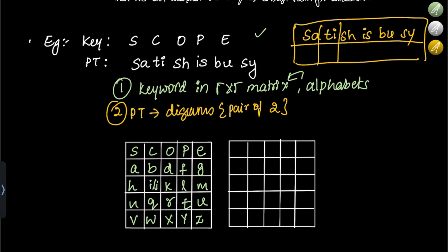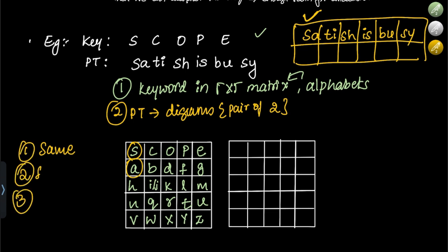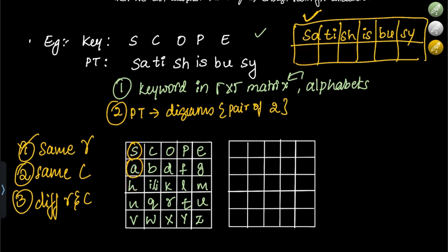For the pair S and A: S is here, A is here. They are in different rows and different columns. For S, take the letter in S's row at A's column, which is A; and for A, take the letter in A's row at S's column, which is H. So SA encrypts to AH.